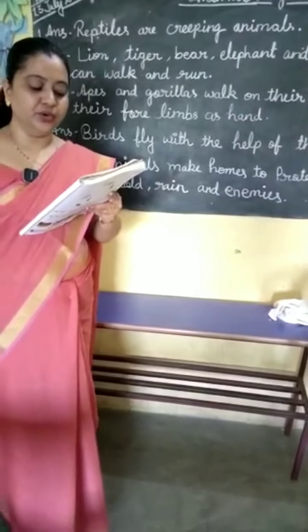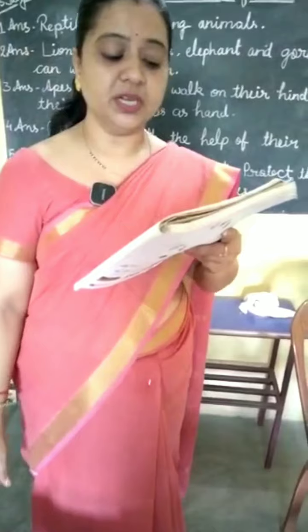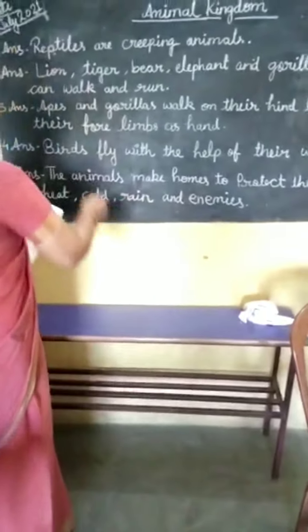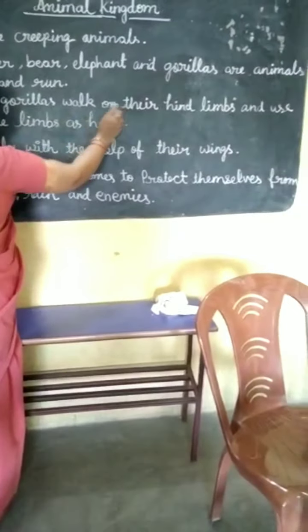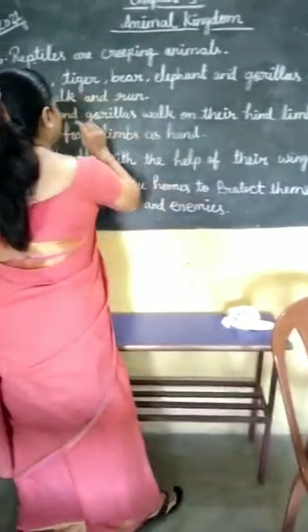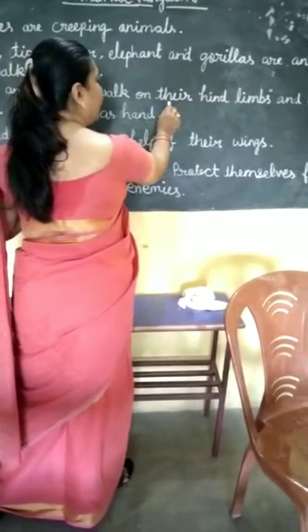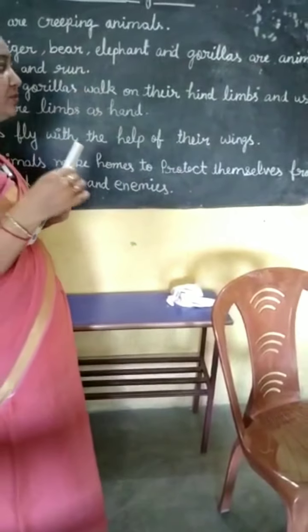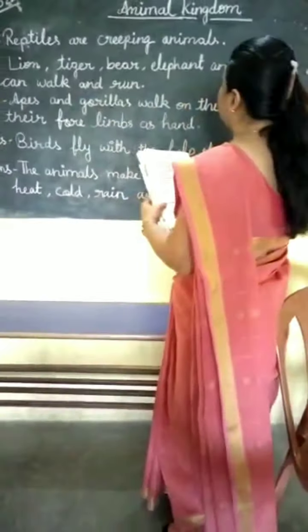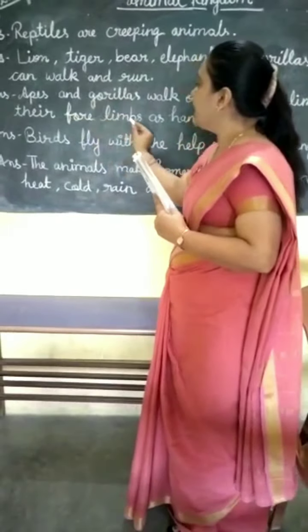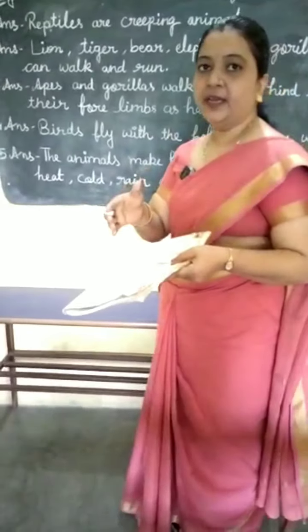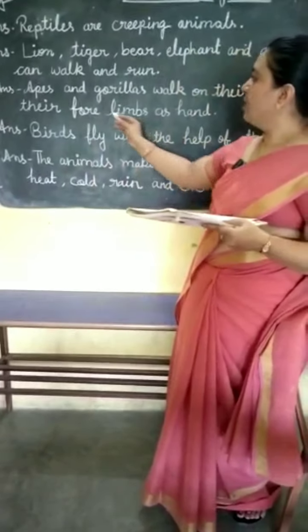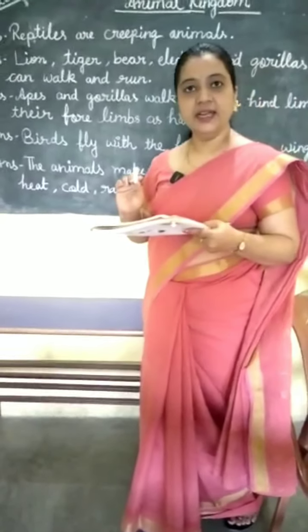How do apes and gorillas use their limbs? Apes and gorillas walk on their hind limbs, and use their four limbs as hands — for example, to grab or lift things. That is how they use their four limbs as hands. Okay, clear students?